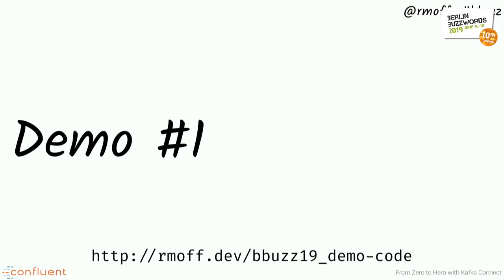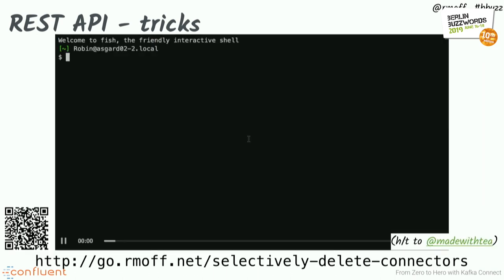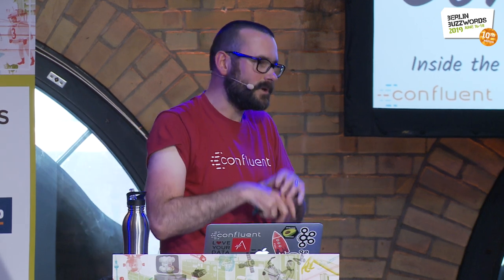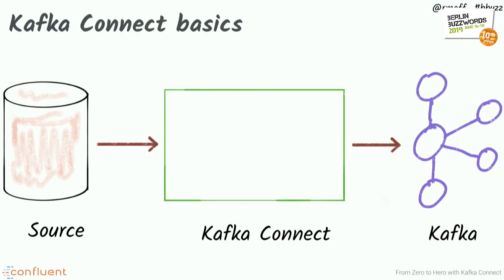Now let's understand a bit more about what Kafka Connect actually is. Kafka Connect is a modular framework and it's part of Apache Kafka. Apache Kafka is a distributed commit log, an event streaming platform. It has a producer and consumer API, the Connect API, and the Streams API - these are all parts of Apache Kafka. If you're using Apache Kafka, you already have Kafka Connect since version 0.10. If you're integrating with HDFS, S3, or any system and writing your own integration, probably you shouldn't be - most of the time Kafka Connect is what you should be using.